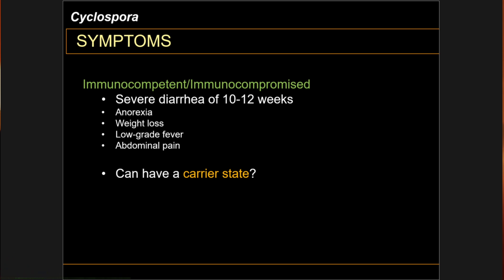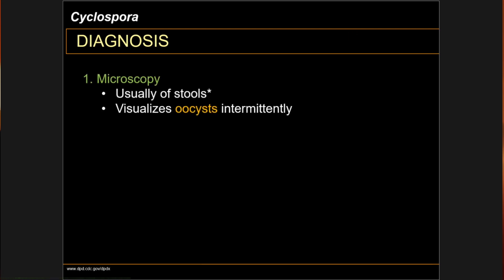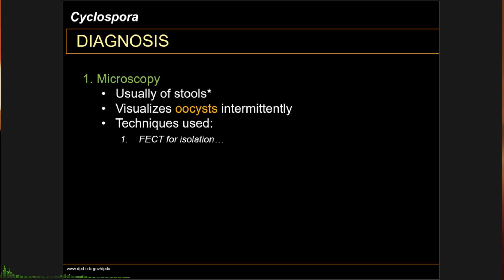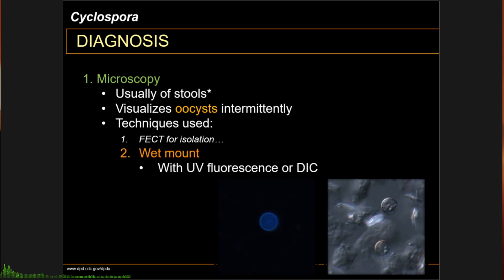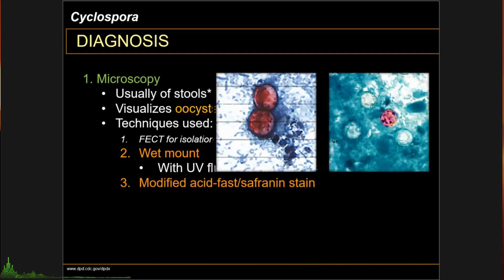The symptoms of cyclosporiasis are very similar to Cryptosporidium diarrhea. However, cyclosporiasis can be seen in both immunocompetent and immunocompromised individuals, which is in contrast to Cryptosporidium. In endemic countries, asymptomatic carrier states can be present. Diagnosis is similar to Cryptosporidium infections — usually through visualization of oocysts in stools, using formalin-ether concentration technique, UV fluorescence, or differential interference contrast microscopy under wet mount.